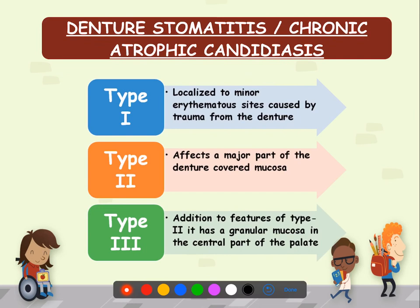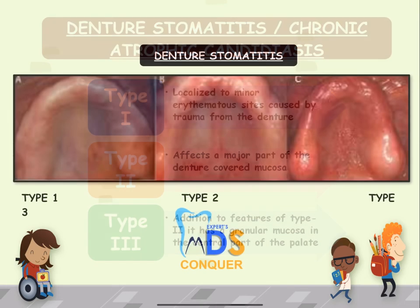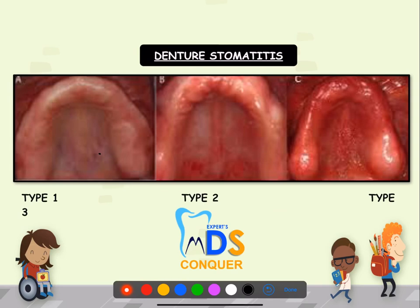Chronic atrophic candidiasis, also called denture stomatitis, has three types. In Type 1, only minor erythematous sites caused by trauma from the denture are seen. In Type 2, it affects a major part of the denture-bearing area. In Type 3, in addition to Type 2, the central palate shows granular mucosa. Type 1 shows only minor sites, Type 2 covers the entire alveolar mucosa, and Type 3 covers the entire alveolar mucosa with granular tissue on the central palate.